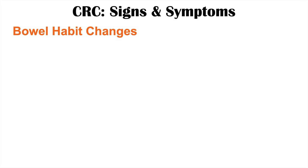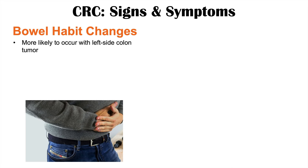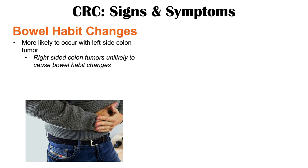Other important findings in colon cancer are bowel habit changes, which are more likely to occur with left-sided colon tumors. A right-sided colon tumor is unlikely to cause bowel habit changes. What happens is there's often an alternation between constipation and diarrhea. A patient may have had normal bowel habits their entire life and then suddenly develop alternating diarrhea and constipation. This can look like irritable bowel syndrome, but because the patient is often older than 50, it is a red flag.